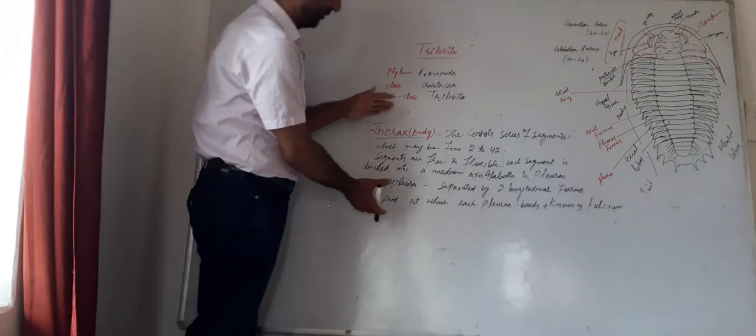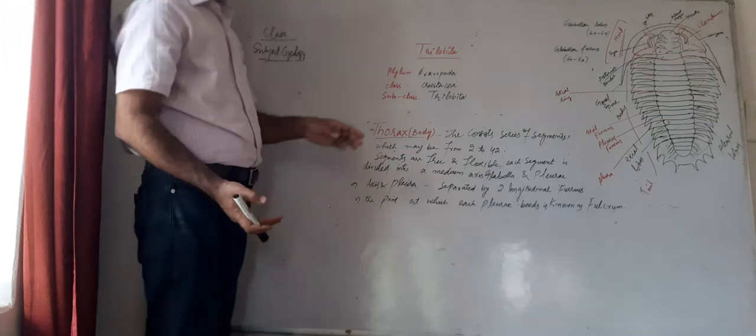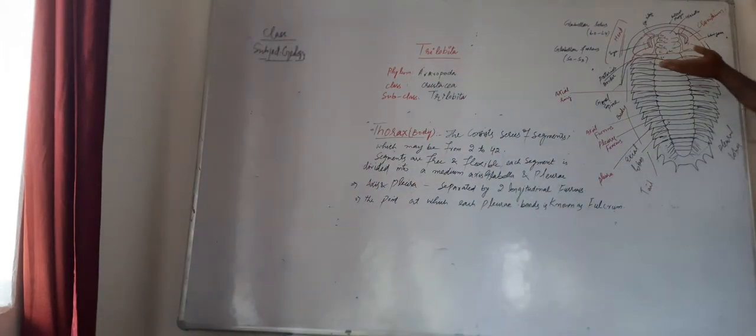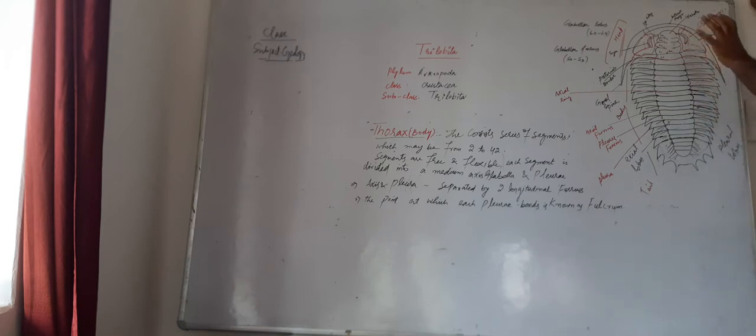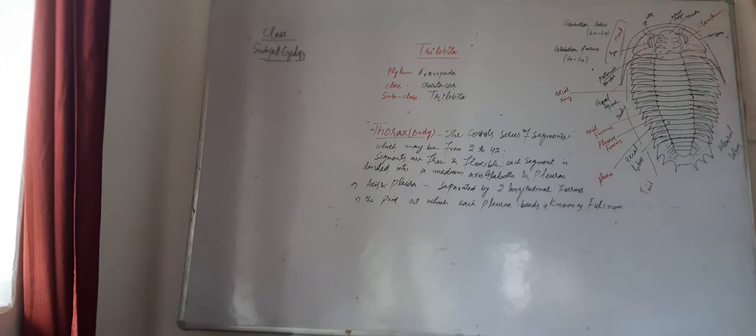Today we will look at the body part. As you know, the body contains a series of segments — you have already seen that this is an orthocone-type animal with a series of segmented body which may range from a minimum of 2 up to a maximum of 42. So trilobite animals can have a minimum number of segments of 2 and a maximum number of 42.